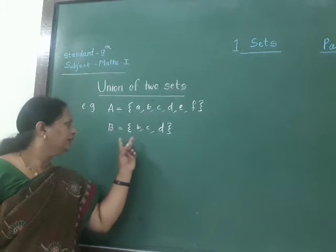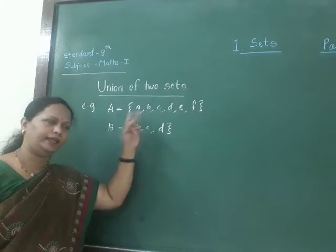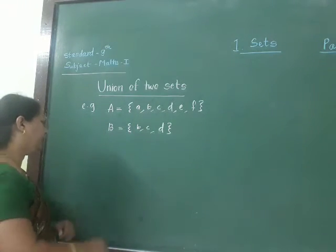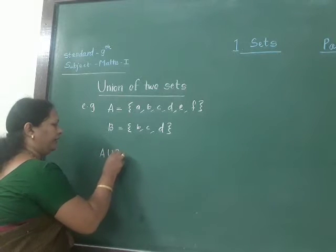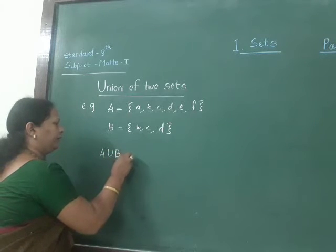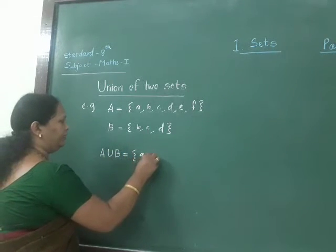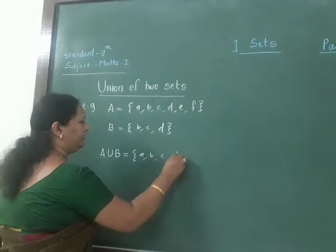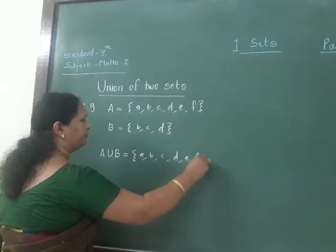Here set B is the subset of set A. Now, what about A union B? Then A union B will be A, B, C, D, E and F.